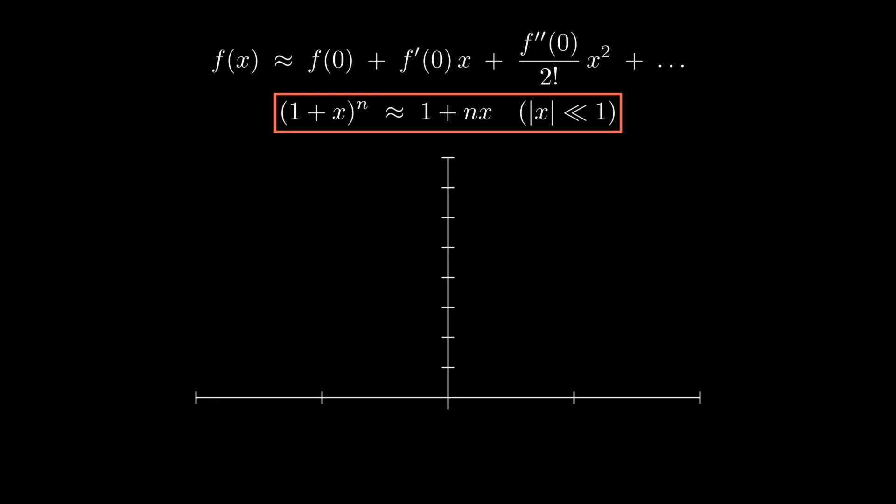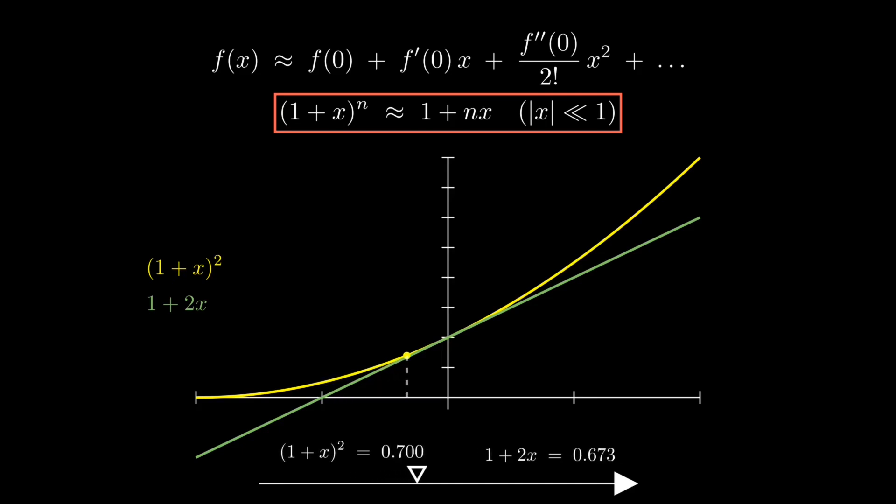Let's take a look at a graphical comparison to understand exactly how good our approximation is, practically speaking. So we have two curves here. The yellow one shows the exact function, 1 plus x whole squared, while the green curve shows our simplified binomial approximation, 1 plus 2x. You can see that around x equals 0, these two curves align very closely, which confirms our approximation's accuracy for very small values of x. As x moves further away from 0, the curves naturally diverge and our approximation breaks down.